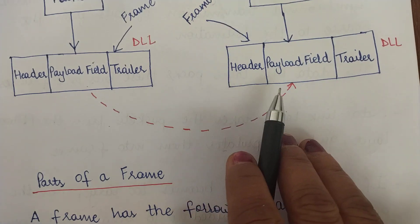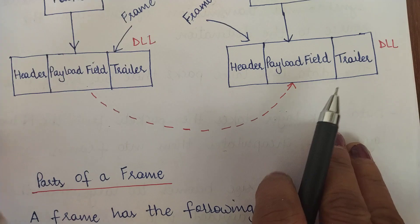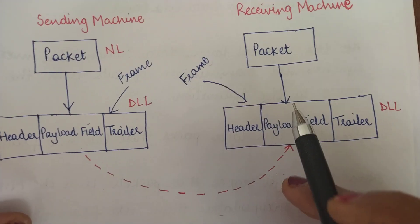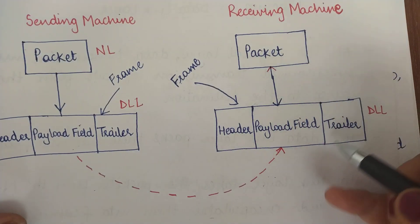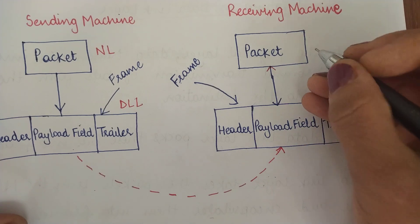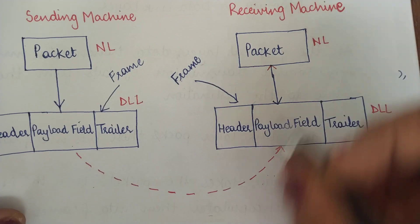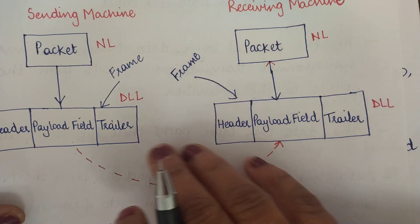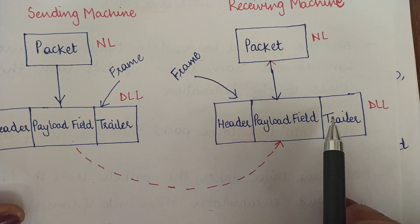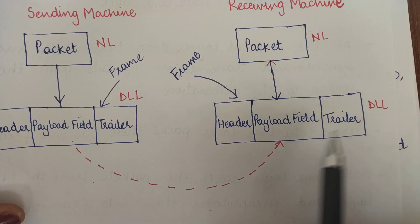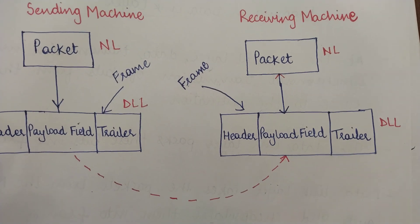At the receiving machine, the raw bits arriving at the physical layer are passed up to the data link layer, where they are converted into a frame consisting of header, payload field, and trailer. The frame then moves up to the network layer of the receiving machine, where it is recognized as a packet. This task is performed at both machines — in the sending machine the packet is converted into a frame, and in the receiving machine the frame is converted back into a packet.